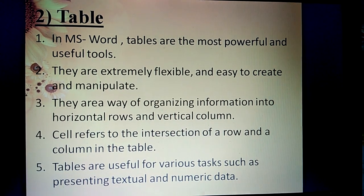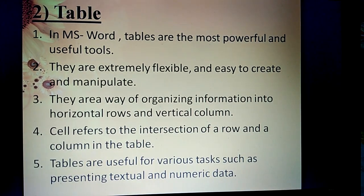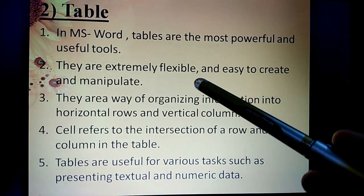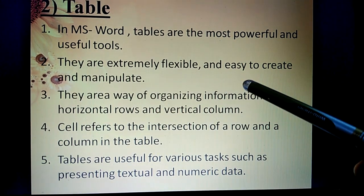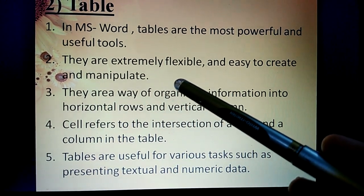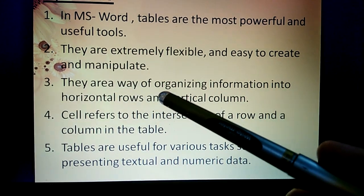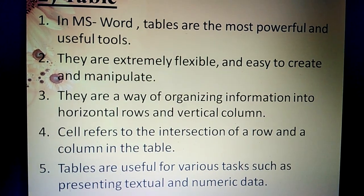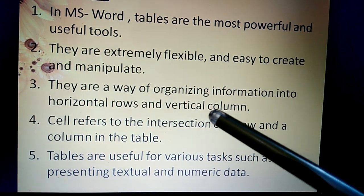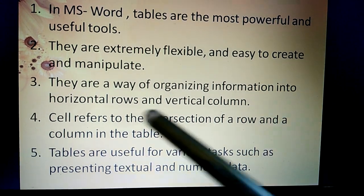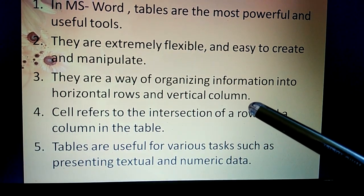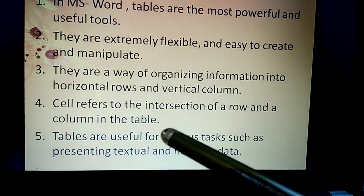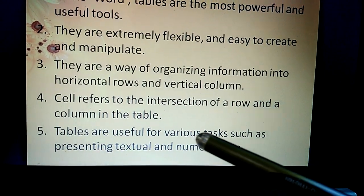Second topic is Table. In MS Word, tables are the most powerful and useful tools. They are extremely flexible—that means we can increase rows and columns—and easy to create and manipulate. They are a way of organizing information into horizontal rows and vertical columns. Cell refers to the intersection of a row and a column in the table.